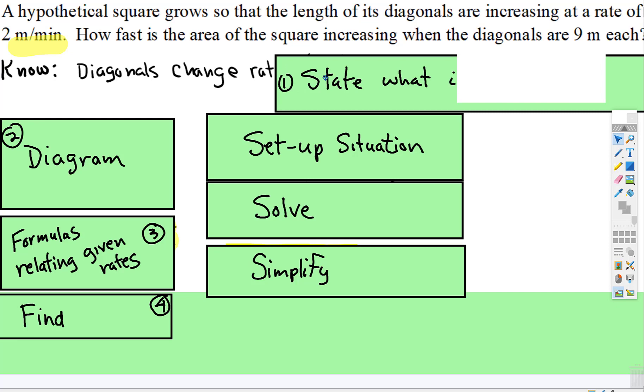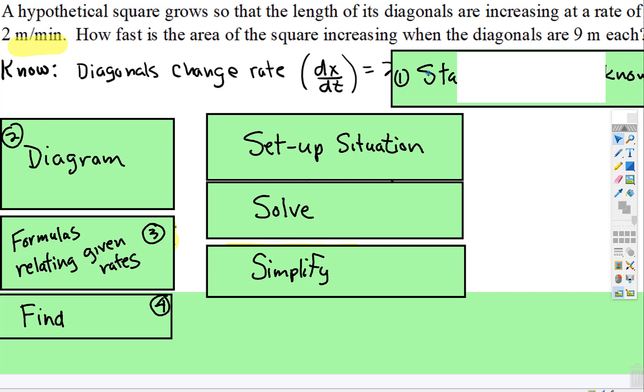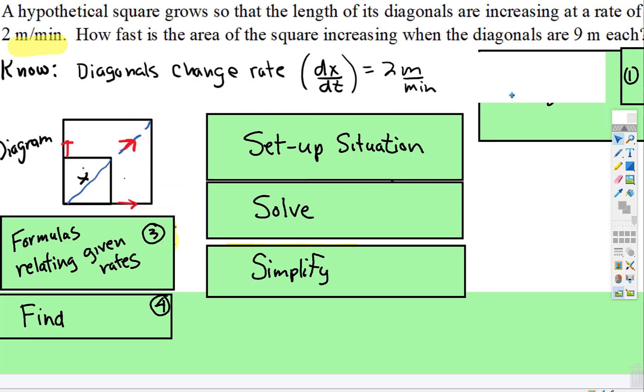So what we know is the diagonals are changing at a rate of 2 meters per minute. The diagram, notice it's now the diagonals that are growing, and notice the arrow is for growing. We start off small and we're getting bigger, so it's increasing.